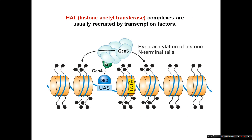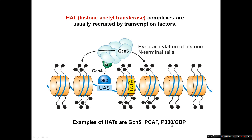HAT complexes are recruited by transcription factors, as they don't have sequence-specific DNA binding activity and so don't know where to go within the genome. For example, GCN4 is a protein with a DNA binding domain and an activation domain which has recruited a complex containing a HAT called GCN5, and GCN5 has acetylated the nucleosomes in the vicinity of that transcription factor binding site. Other examples of HATs include PCAF and P300/CBP, which are two very similar proteins.